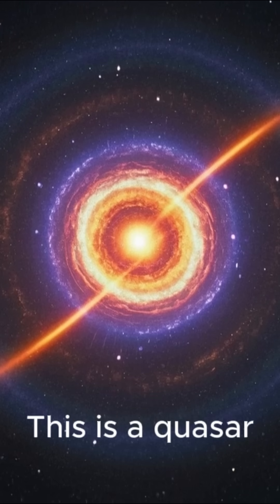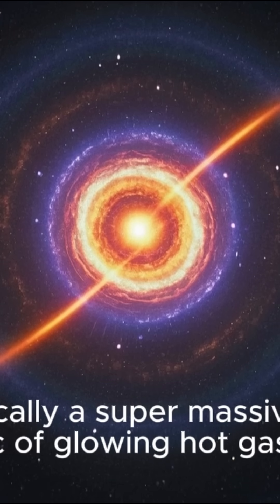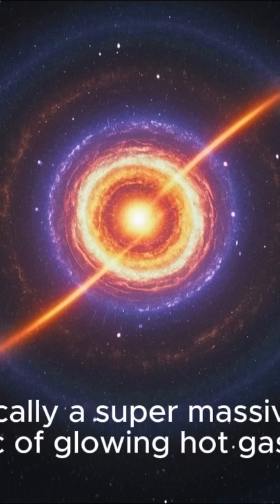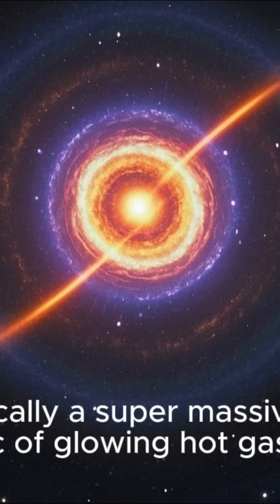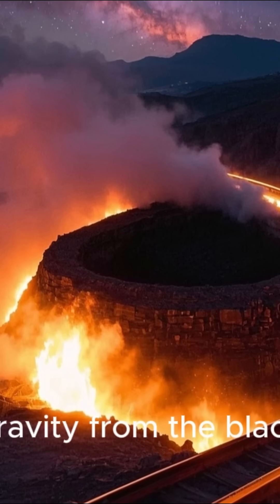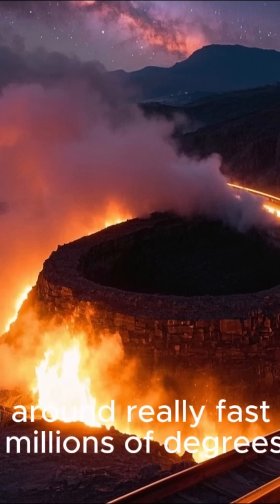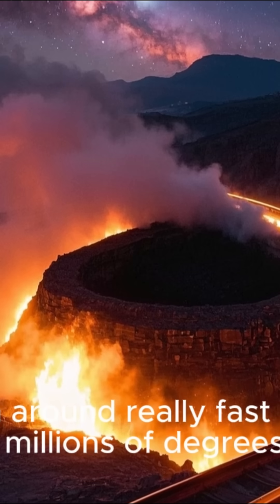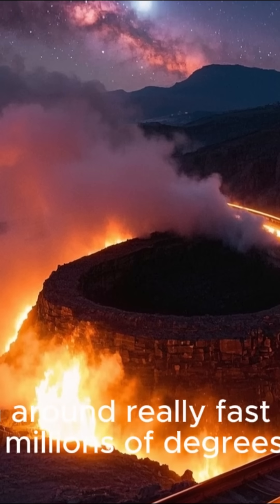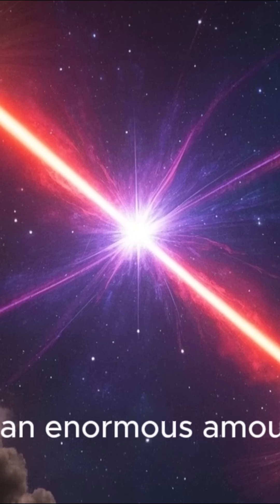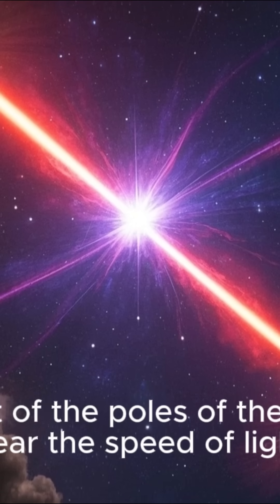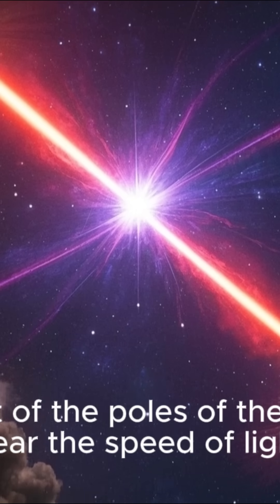This is a quasar, which is basically a supermassive black hole with a disk of glowing hot gas around it. The intense gravity from the black hole causes the gas to spin around really fast and heat up to millions of degrees. This creates an enormous amount of energy that blasts out of the poles of the black hole at near the speed of light.